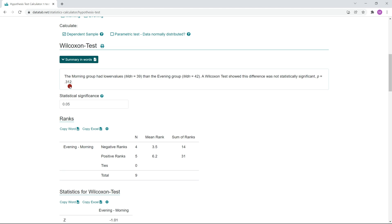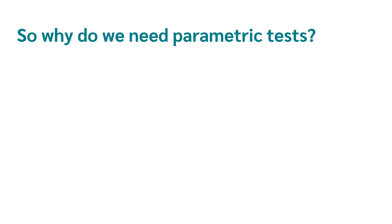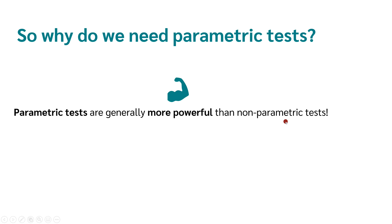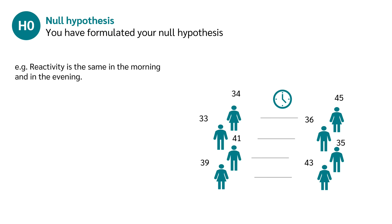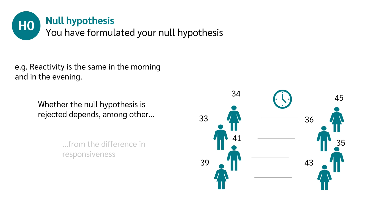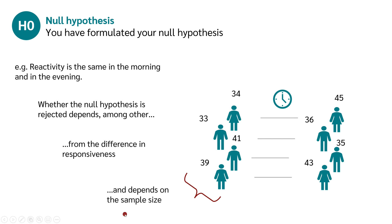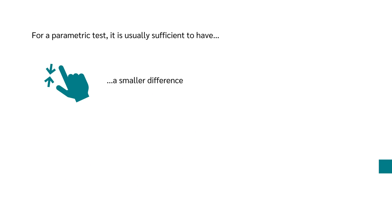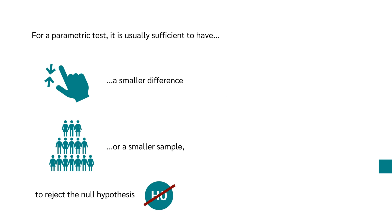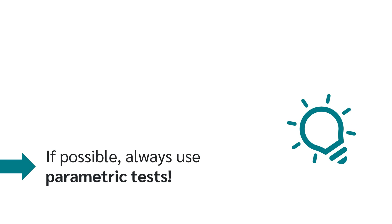Now, as promised, why should you always prefer a parametric test like the t-test to a non-parametric test? We discussed that the Wilcoxon test has fewer requirements than the t-test. But parametric tests usually have a greater test strength than non-parametric tests. This means that whether the null hypothesis is rejected depends on the difference in responsiveness and the sample size. In a parametric test, usually a smaller difference or a smaller sample is sufficient to reject the null hypothesis. So if possible, always use a parametric test.